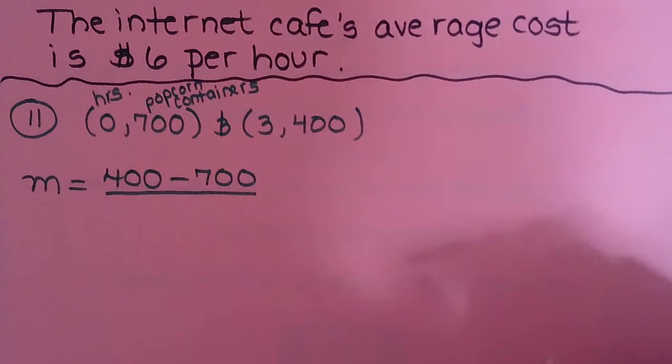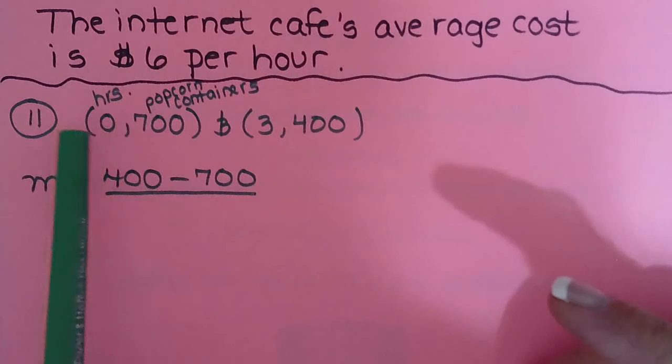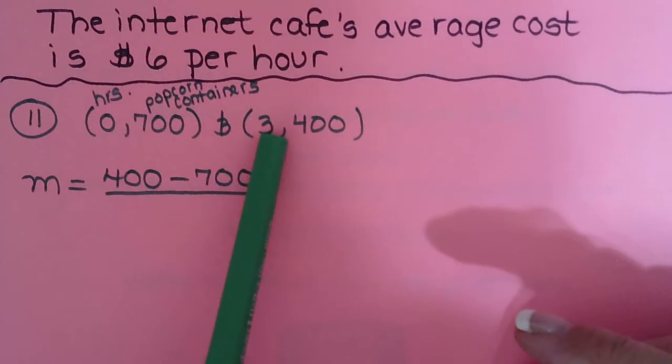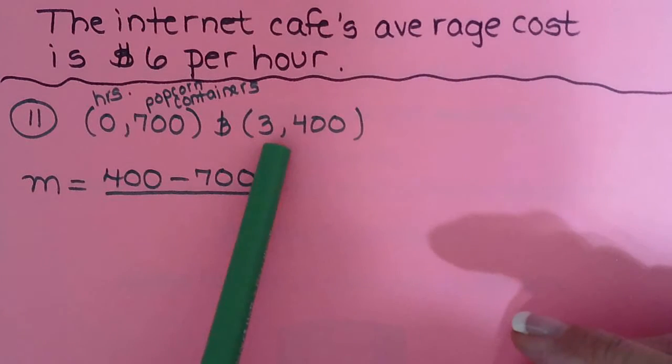Okay, we're right in the middle of problem number 11. We'd written our two ordered pairs. We found that x was ours because it said 3 hours later. So right now we called 0 or at the beginning of the day 0, 3 hours later, 3.